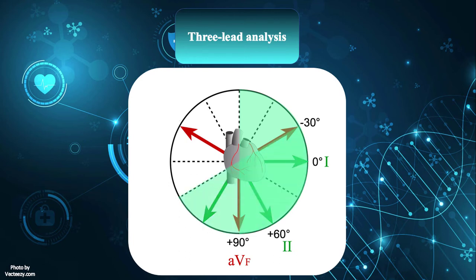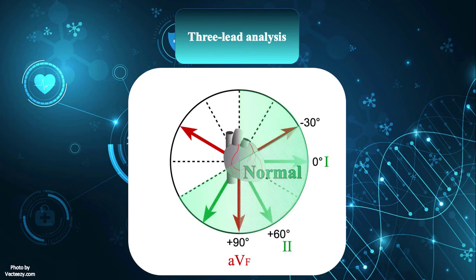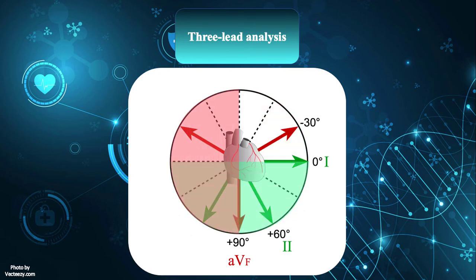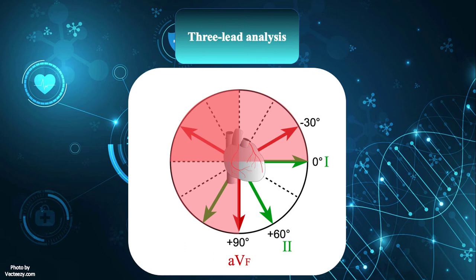If leads 1 and 2 are both positive, the heart axis extends from minus 30 to 90 degrees, which is within normal range. If lead 1 is positive but lead 2 is negative, the cardiac axis extends from minus 30 to minus 90 degrees — the axis is deviated leftwards. If lead 1 is negative but AVF is positive, the heart axis falls between 90 and 180 degrees, indicating right axis deviation. If both leads 1 and AVF are negative, the axis falls between minus 90 and 180 degrees, indicating extreme axis deviation or northwest axis.